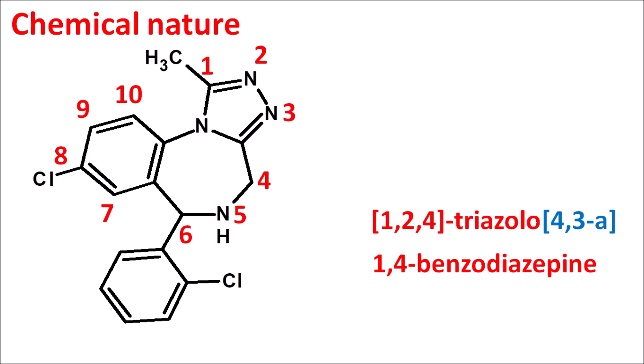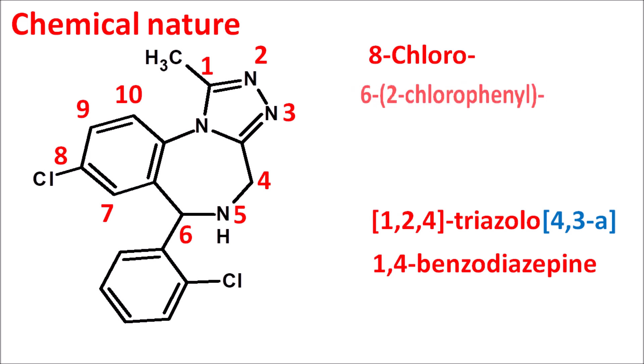Now let us see the side chains at different positions. At the eighth position, a chlorine group is present — so 8-chloro. At the sixth position, a phenyl ring with a chlorine group is present — so 6-(2-chlorophenyl). At the first position, a methyl group is present — so 1-methyl. And there is saturation at the fourth position — so 4H. That is the complete name of trizolam.